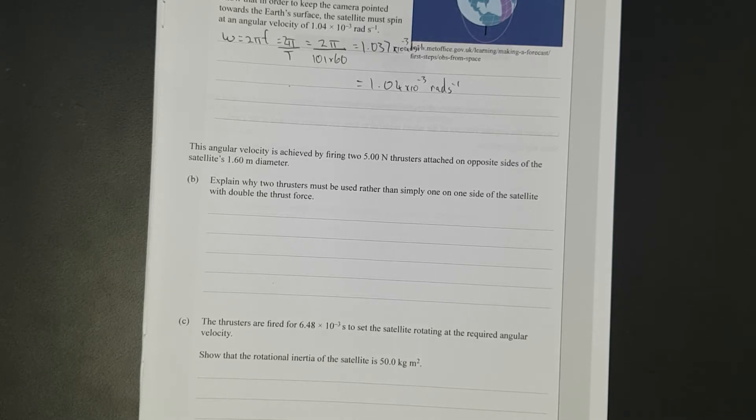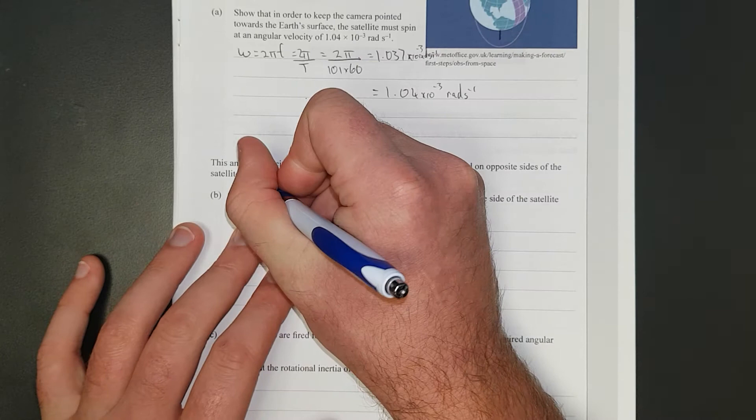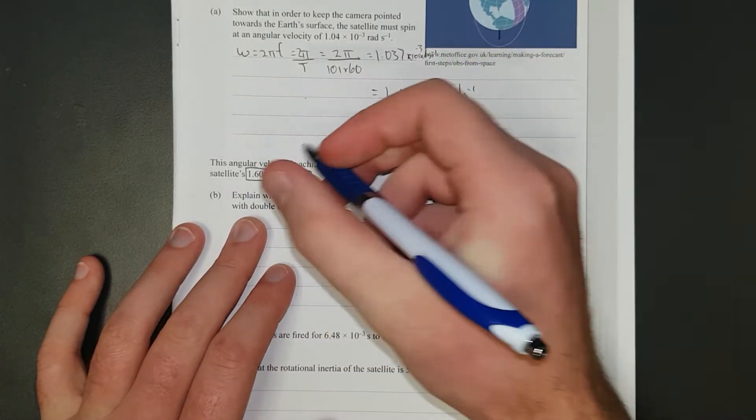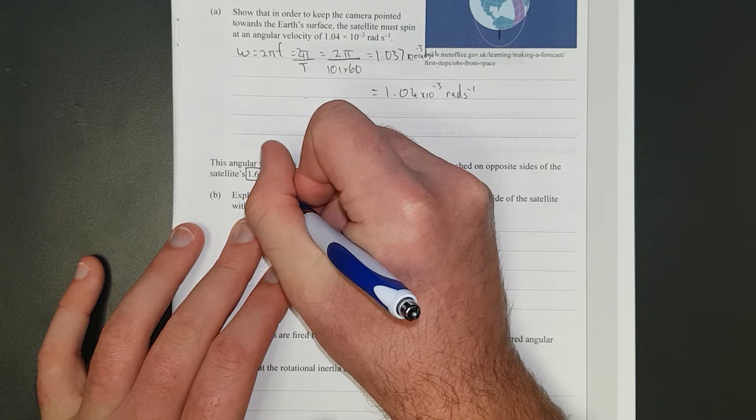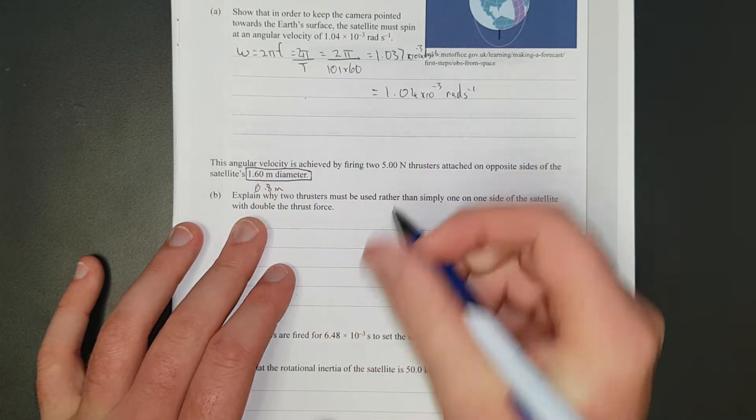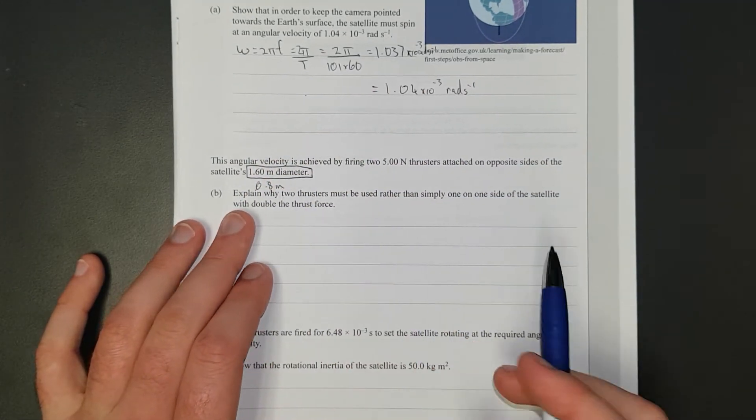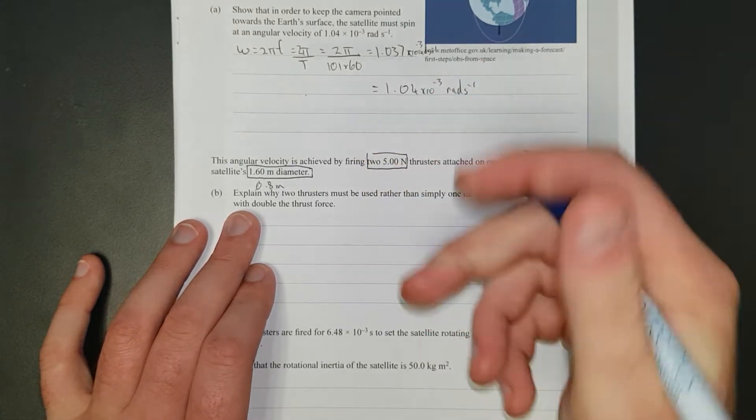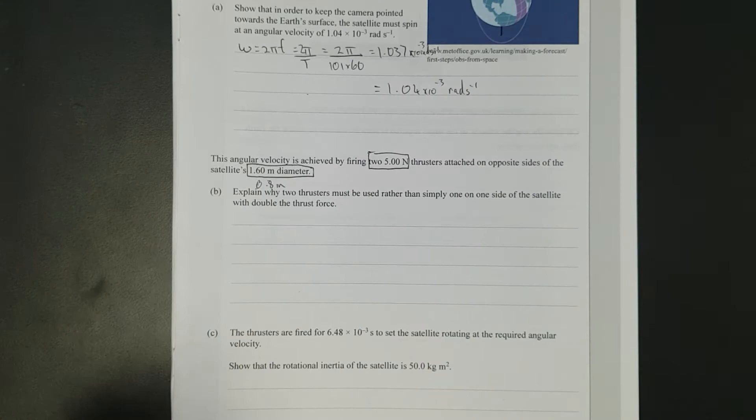Before we continue, I'm just going to circle this, because this will screw you up later. You hardly ever deal with anything to do with diameter, so we'll divide that by 2 to get the radius. It's just something to pick out pretty quickly. There are two of these, so I'll just quickly circle that. I'll pause the video right now to go through.